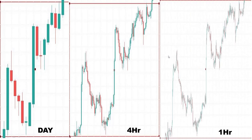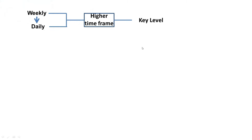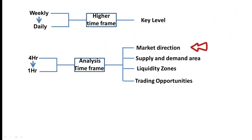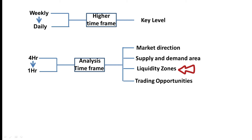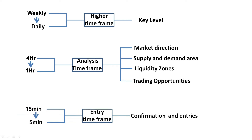This will be done step by step. We will consider three types of timeframes in our analysis starting from the higher timeframe. First, we look at the weekly and daily, which we use to place the key levels for market structure. Second, we use four hours and two hours for analysis, including market direction, supply and demand areas, liquidity zones, and trading opportunities. Third, we use the 15 minutes and five minutes for the confirmation and entry timeframe.